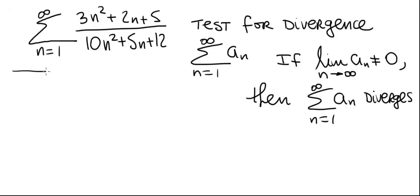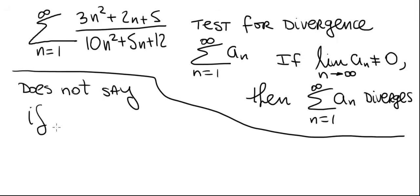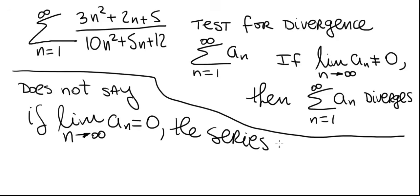Now what it doesn't say, and this is a very common mistake that students make in the beginning when they first learn about series. What it does not say: if the limit as n goes to infinity of a_n does equal 0, the series converges. That is not true. So make sure you know that this is not true.